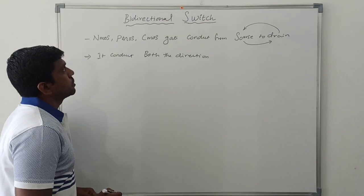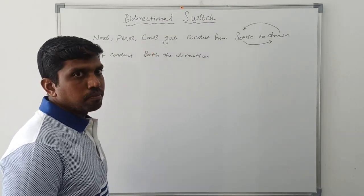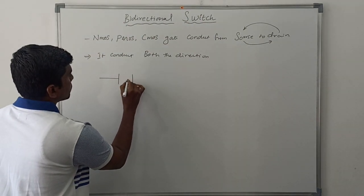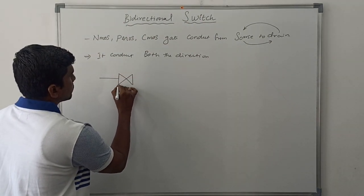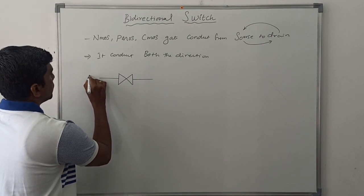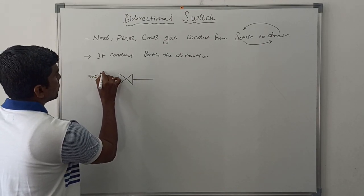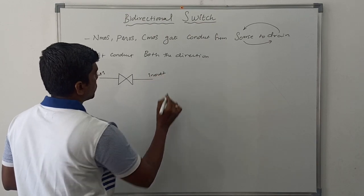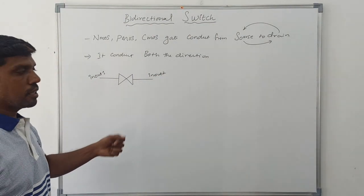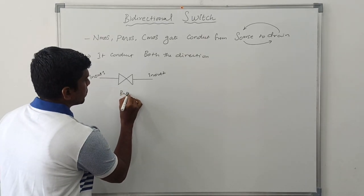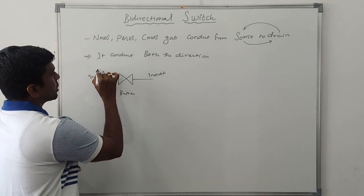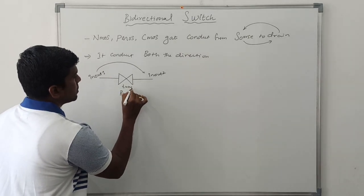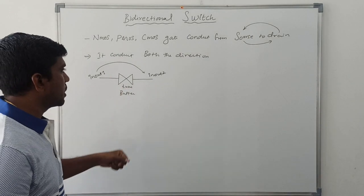Now I am going to draw the graphical representation of the bi-directional switch. The first symbol has in/out one and in/out two. This symbol acts as a buffer — the input signal is connected to the output. The keyword for this is TRAN.